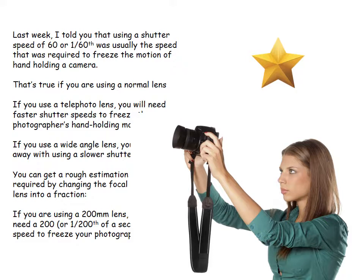If you use a telephoto lens, you're going to need a faster shutter speed to freeze the photographer's hand-holding motion. If you use a wider-angle lens, you can get away with a slower shutter speed. A rough rule of thumb: the shutter speed you need roughly corresponds to the focal length. For example, with a 200mm lens, you'll likely need around 1/200th of a second to freeze photographer motion. As your lens gets shorter, you can generally use a longer shutter speed.